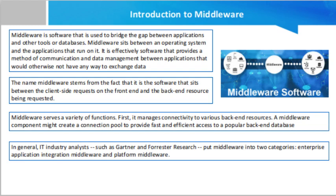Now how does middleware work? Network-based requests attempt to interact with back-end data. This data might be something as simple as an image to display or a video to play, or it could be as complex as a history of banking transactions. The requested data can take many different forms and may be stored in a variety of ways, such as fetched from a message queue or preserved in a database. The role of middleware is to enable and ease access to those back-end resources. Middleware programs typically provide a messaging service for applications to transfer data, such as SOAP, REST, or JSON.